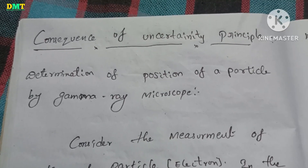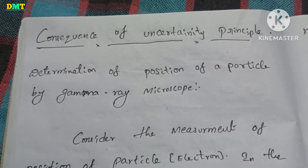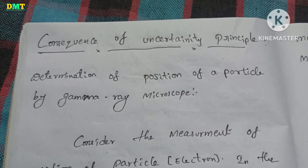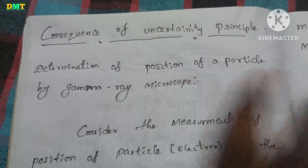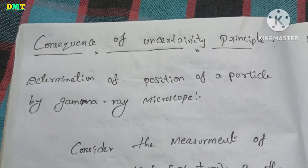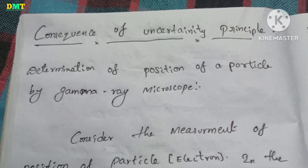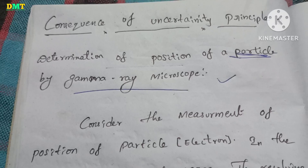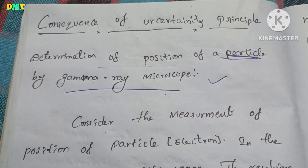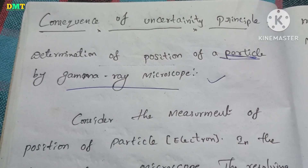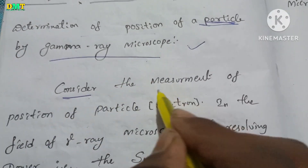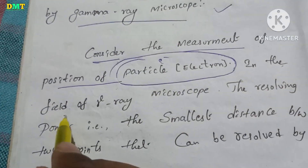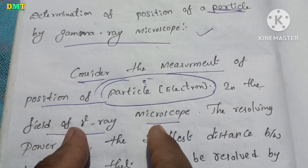Explain the gamma ray microscope as a consequence of the uncertainty principle. This is the solution to this problem. Let's take a look at the uncertainty principle — an electron in the field of a gamma ray microscope.